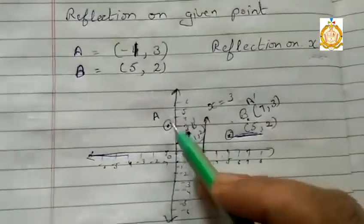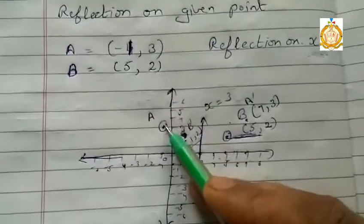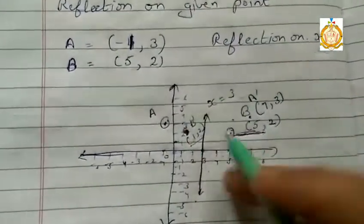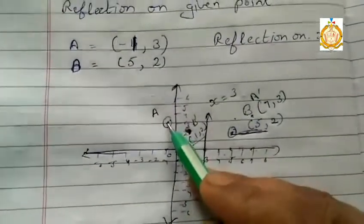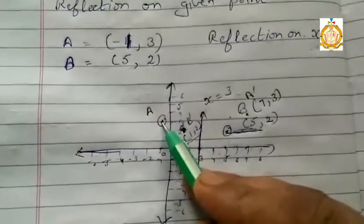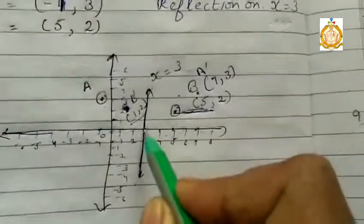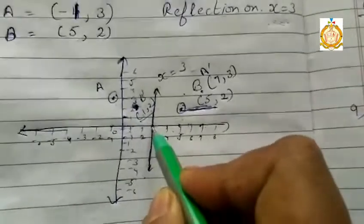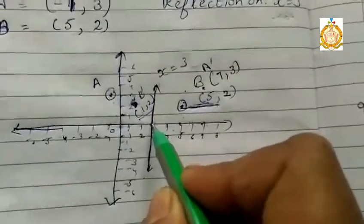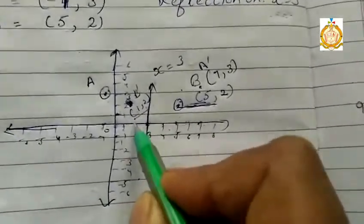Now if this is the mirror, the image of this value will go to this side. Now we have to see this point how many steps far away from this line. Count it, don't start the counting from there.